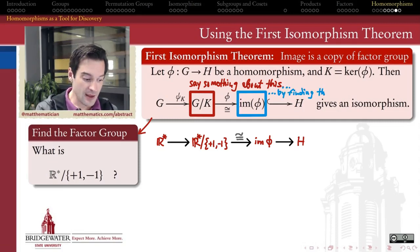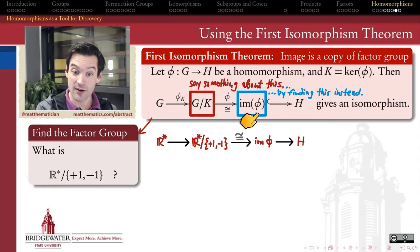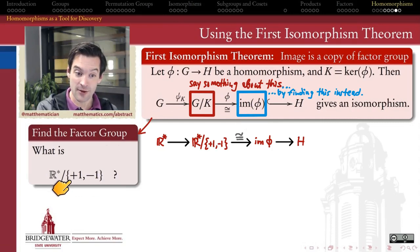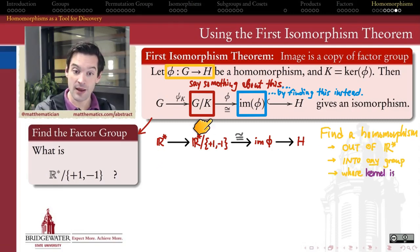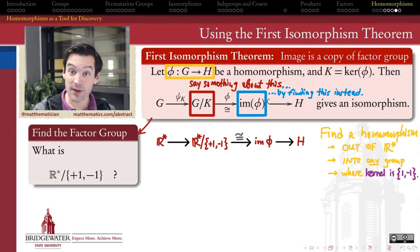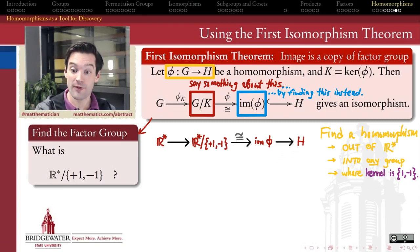The key is that the First Isomorphism Theorem tells me that the factor group is isomorphic to the image of a homomorphism out of G whose kernel is exactly this normal subgroup. Remember, every normal subgroup is the kernel of some homomorphism. So the approach is to find a homomorphism whose domain is R*, whose target group can be any group we want—as long as we can make the kernel of that homomorphism exactly {+1, -1}.